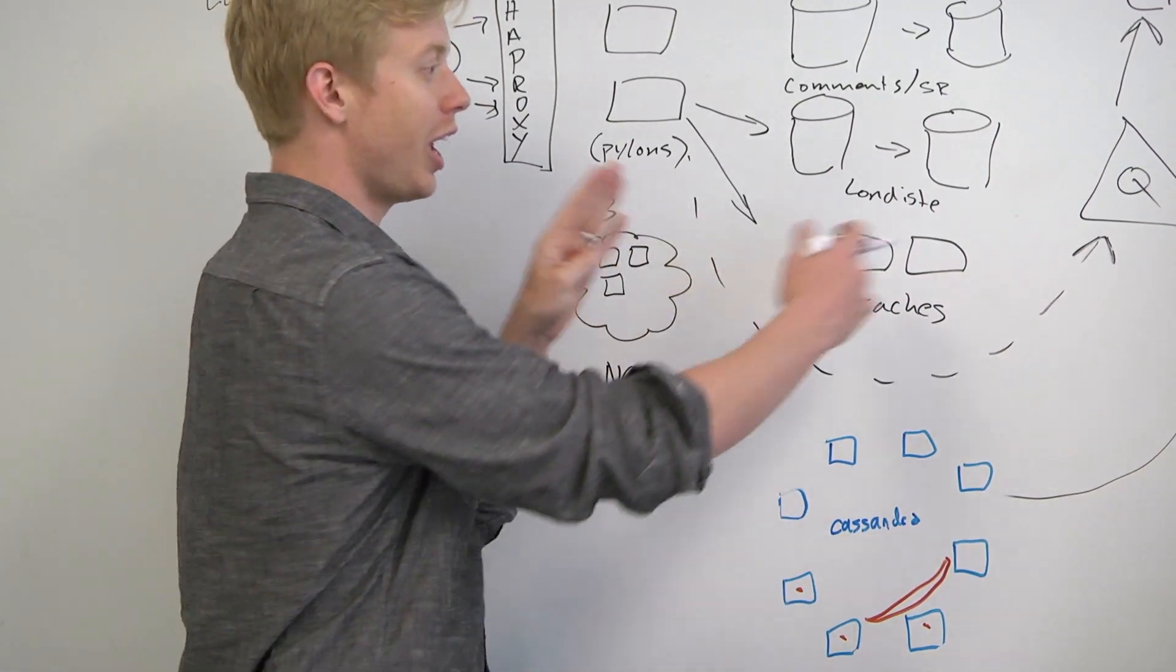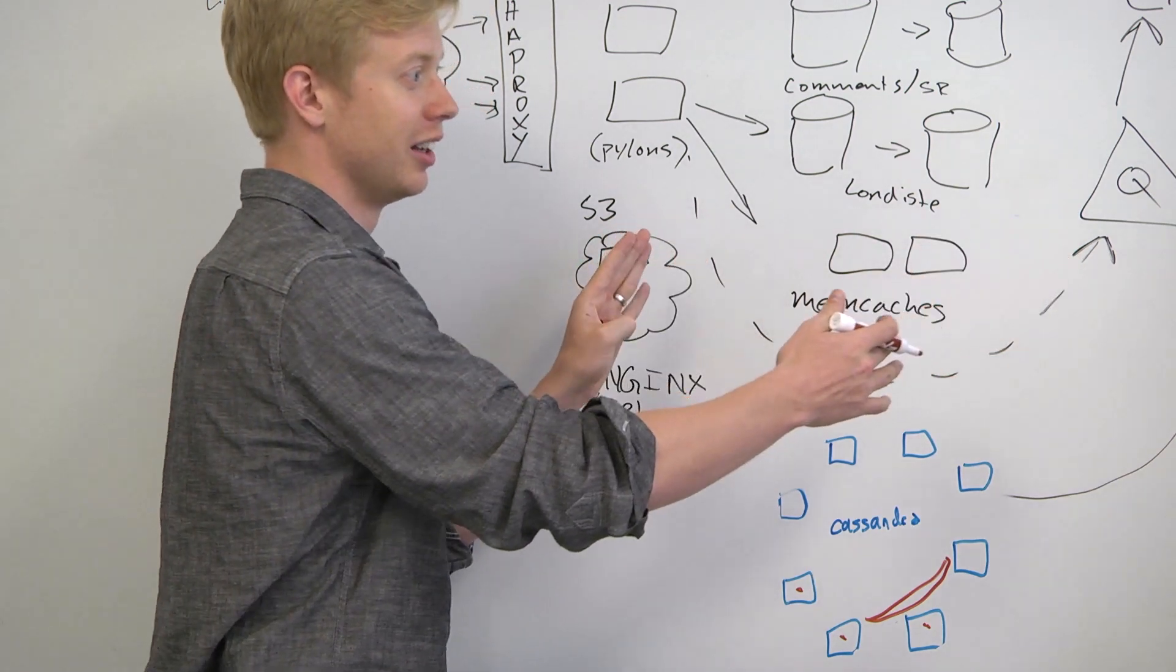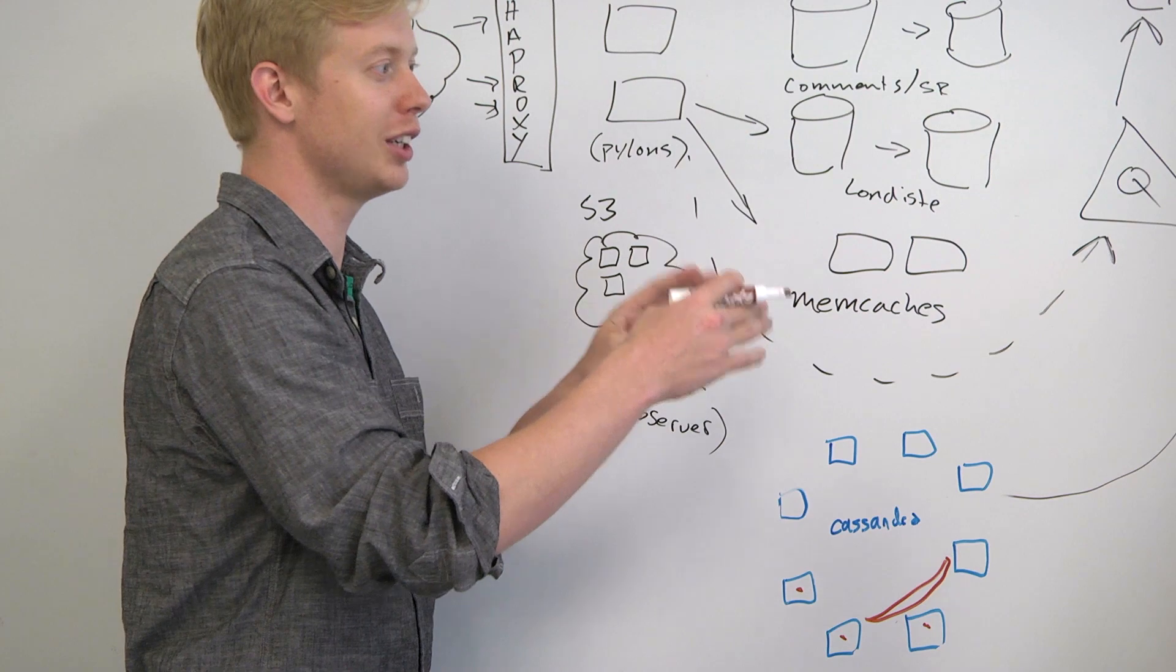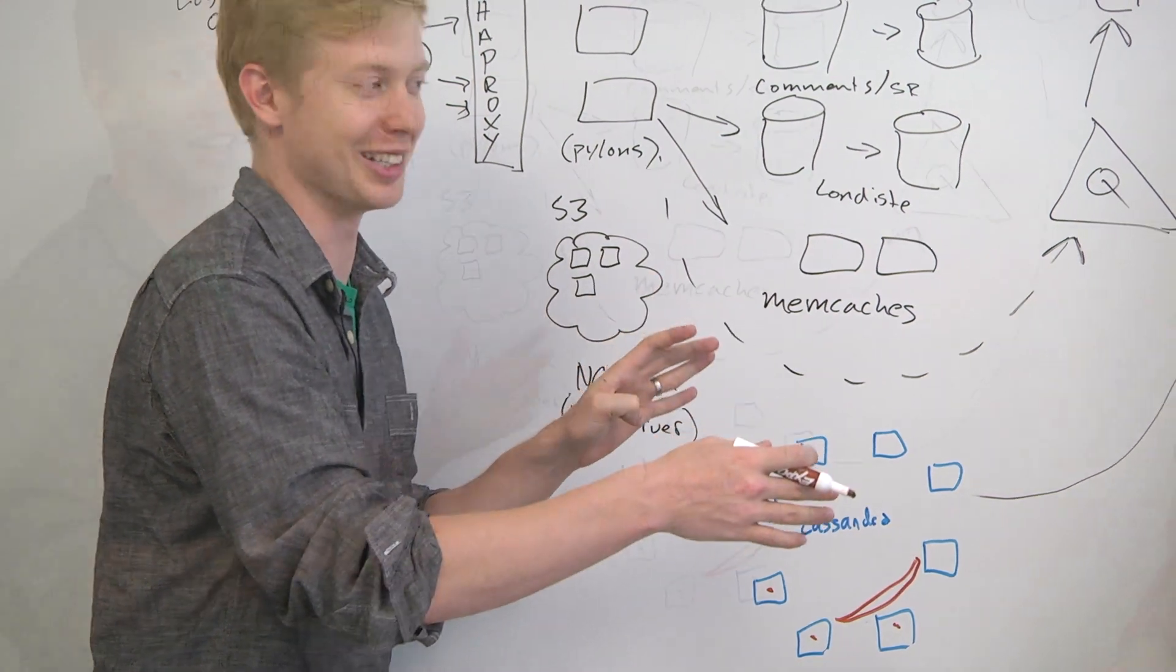If all of a sudden you go from modulo 10 because you have 10 servers to modulo 9, instead of losing one-tenth of your keys, you lose nine-tenths of your keys. That's a big problem.